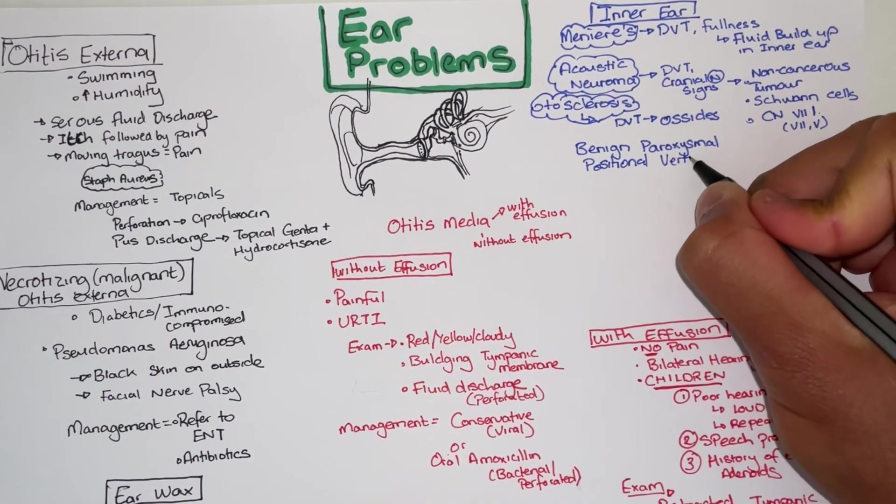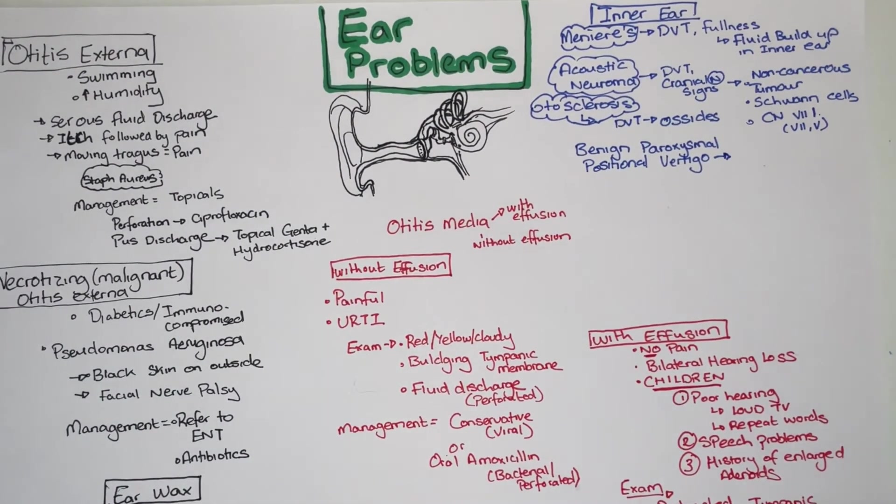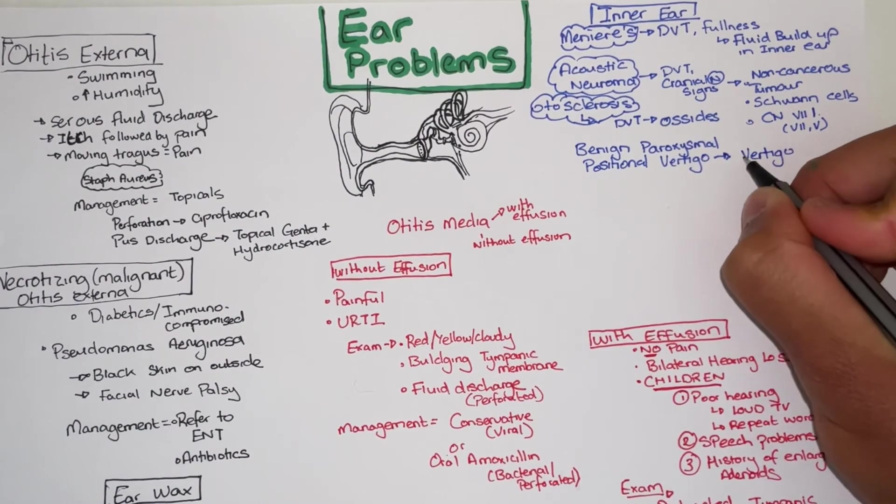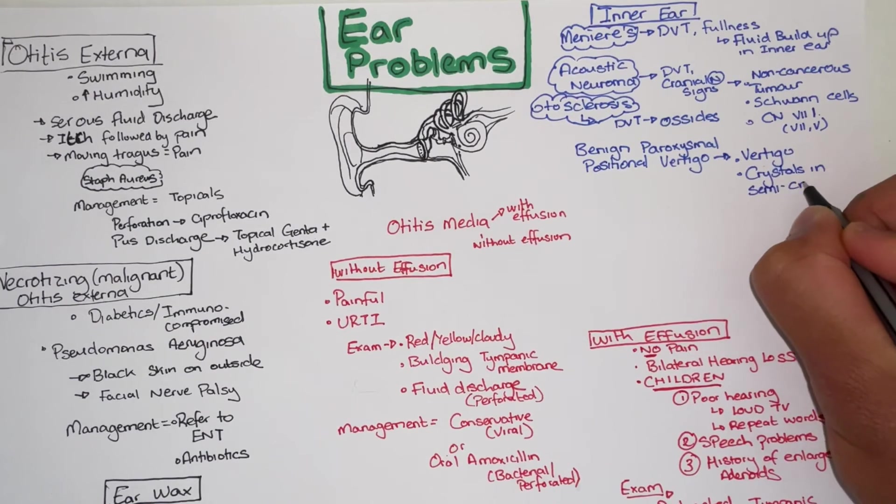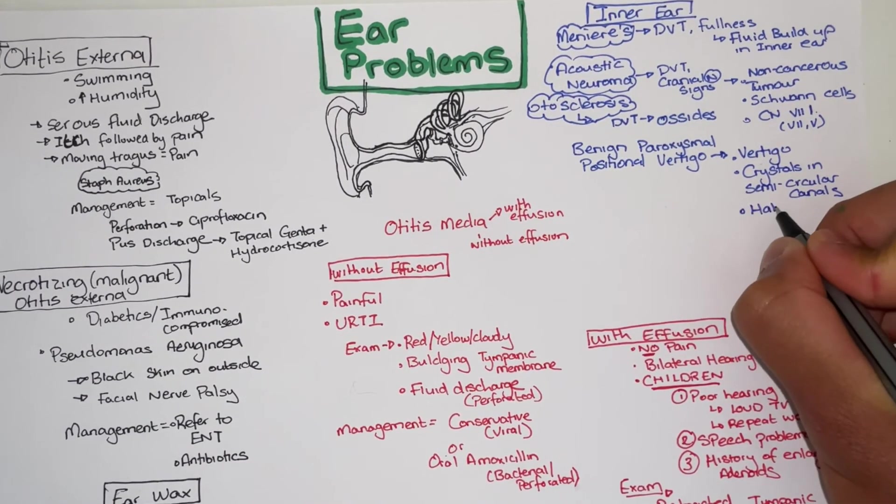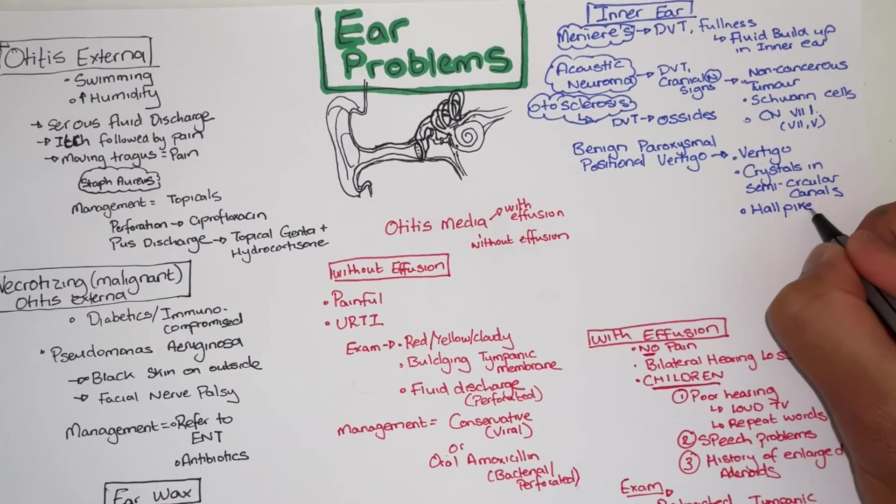Benign paroxysmal positional vertigo causes short bursts of vertigo upon movement of the head. This is due to crystals in the semicircular canal. Holpike's maneuver is used as an easy way to manage this problem.